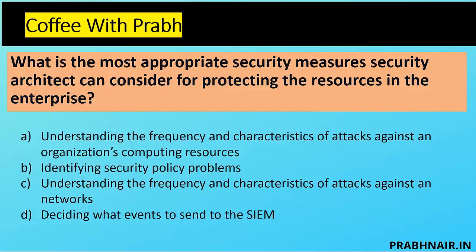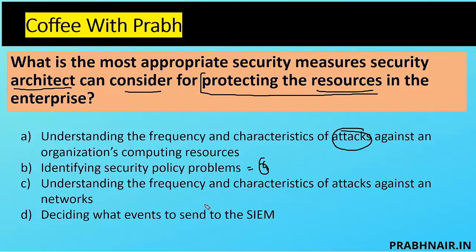What is the most appropriate security measure a security architect should consider for protecting resources in the enterprise? We're talking from a security architect point of view, not a solution implementer. Option A: understand the frequency and characteristics of attacks against the organization's computing resources — true, like data flow diagrams and attack surface analysis. Option B: identifying security policy problems — more from a governance point of view, not directly about protecting resources. Option C: understand the frequency and characteristics of attacks against the network — but why limit it to just the network when we're talking about the overall enterprise? Option D: deciding what events to send to SIEM — more from a monitoring point of view.